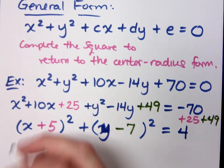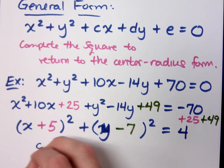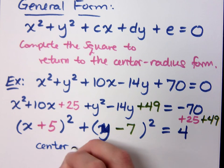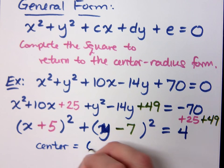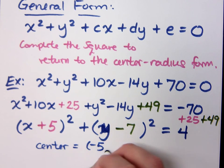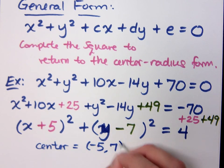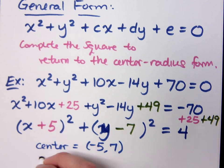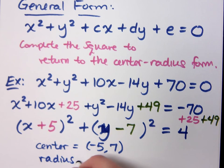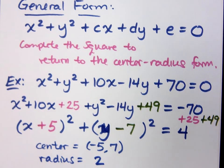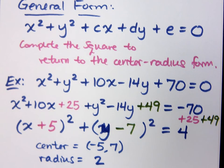What is your center? Negative 5, 7. Yeah, that's cool — negative 5, 7. What's your radius? 2. The radius is 2. Do you all agree? That's cool.